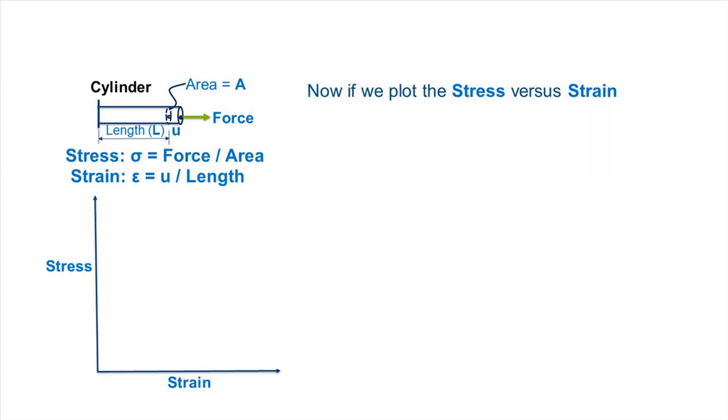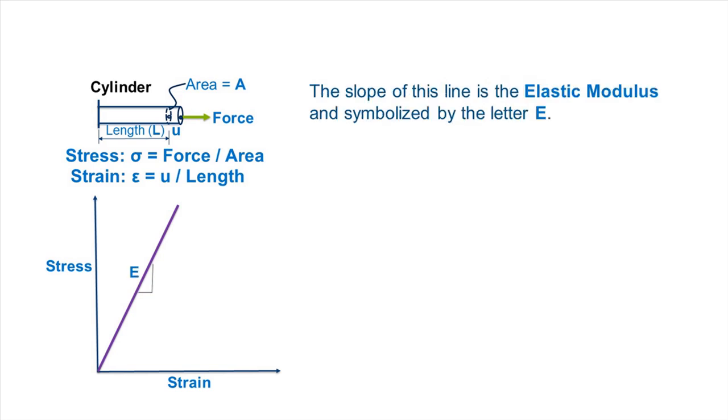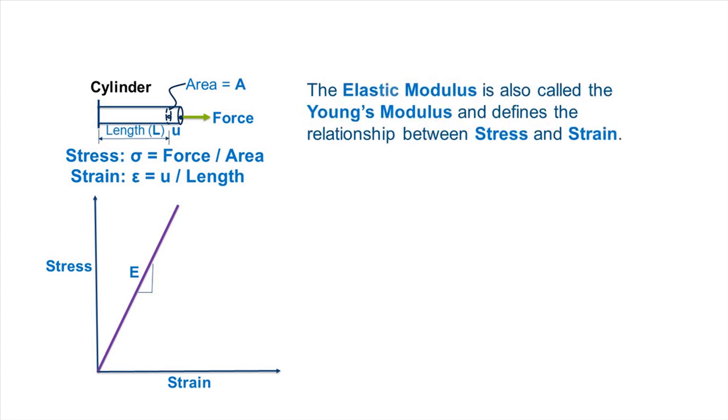Now, if we plot the stress versus strain, we again generate a straight line. The slope of this line is the elastic modulus and is symbolized by the letter E. The elastic modulus is also called the Young's modulus, and for many materials it defines the relationship between stress and strain.